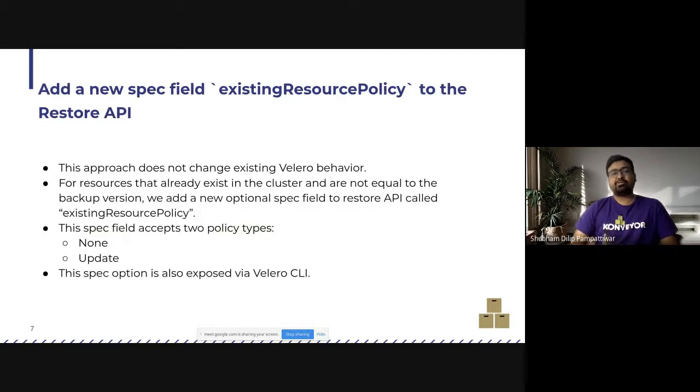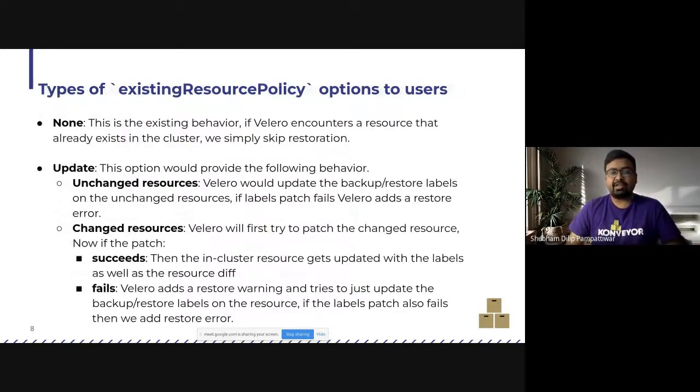So how do we go about the solution? We add a new spec field called existing resource policy to the restore API. So this does not change any existing behavior. We try to preserve the existing behavior. So for resources that already exist in the cluster and are not equal to the backup version, we add a new optional spec field existing resource policy. And it can accept two kinds of policy as of now, none and update. And this can be extended as well to recreate if needed. But that scenario is not covered in this feature as of now. So this spec option is also exposed via Velero CLI like hyphen hyphen existing resource policy.